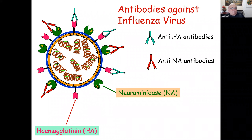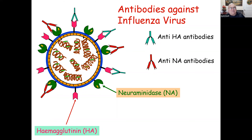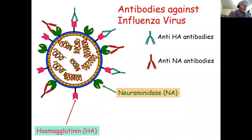Usually, at a given season, you get infected with one dominant influenza virus, and you're not going to be infected with the same influenza virus once again. So you can make antibodies in a year, but the year later you won't have these antibodies.